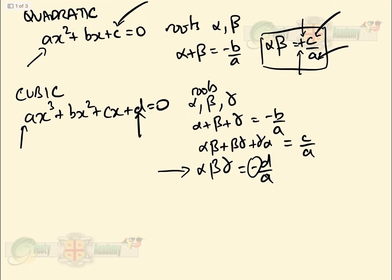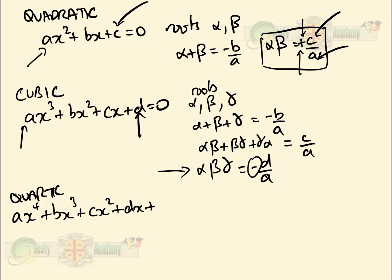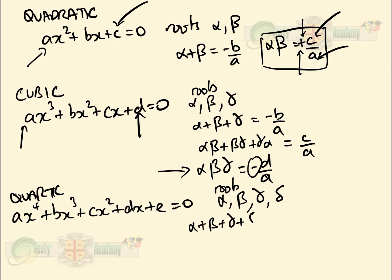For a quartic, ax⁴ + bx³ + cx² + dx + e = 0 with roots alpha, beta, gamma, and delta: the sum alpha + beta + gamma + delta equals -b/a, which is the same as for the cubic and quadratic.